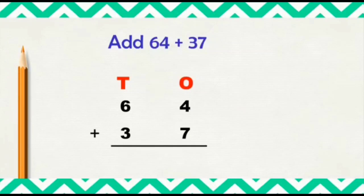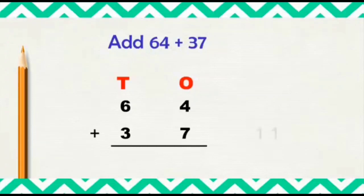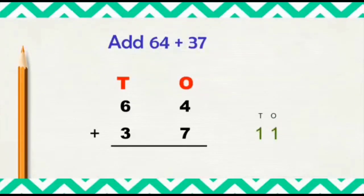Next we will start adding from the 1s column. So what is 7 plus 4? After 7: 8, 9, 10, 11. So can we write 11 as it is under the 1s column? No, we can't write 11 here. In 11 there are 2 digits — that is 1 one and 1 ten. So we can't write 11 at the 1s place only. We will write 1 at the 1s place and carry the other 1 to the 10s place.